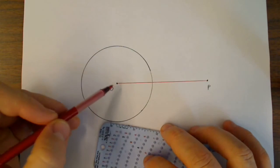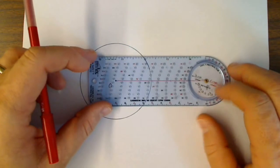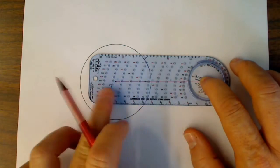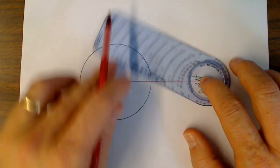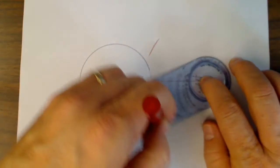Now construct the perpendicular bisector of segment OP. So we put our compass on the center on P. And we choose something that's about halfway, a little bit more. This looks like 70 is more than halfway. So I'm going to make a mark above and below.